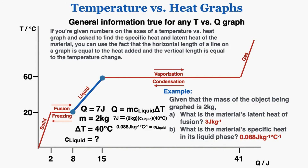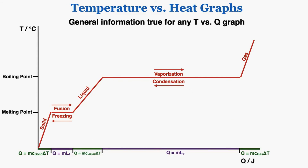We can find specific heat and latent heat just by using the graph — reading the change in temperature on the y-axis and the heat on the x-axis. That's all the information you need to know about how to read temperature versus heat graphs.